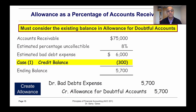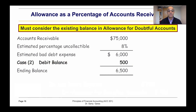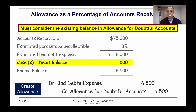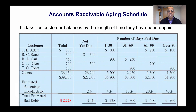We do the journal entry for that amount: we debit bad debt expense and credit allowance by five thousand seven hundred. If we use the debit balance, then we add it to the prior balance: it's going to be six thousand plus five hundred, equal six thousand five hundred, and then we put the same journal entry but with the different amount.